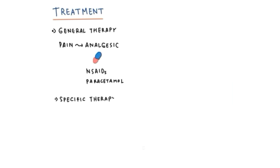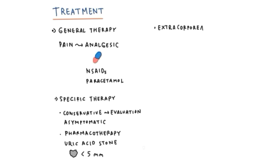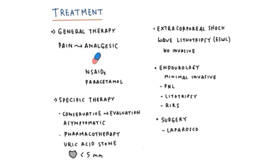After we diagnose patient with nephrolithiasis, we do some treatments. First is general therapy. Patient comes with pain, so we give them analgesic like NSAIDs, paracetamol. Second is specific therapy with conservative to evaluate asymptomatic patient. Pharmacotherapy like allopurinol especially for uric acid stone with the size below 5 mm. There are other options if the size of the stones are bigger: extracorporeal shock wave lithotripsy (ESWL), non-invasive treatment, and urology which is minimally invasive including PNL (percutaneous nephrolithotomy lithotripsy) and retrograde internal surgery (RIRS). We can also do surgery like laparoscopy and open surgery.